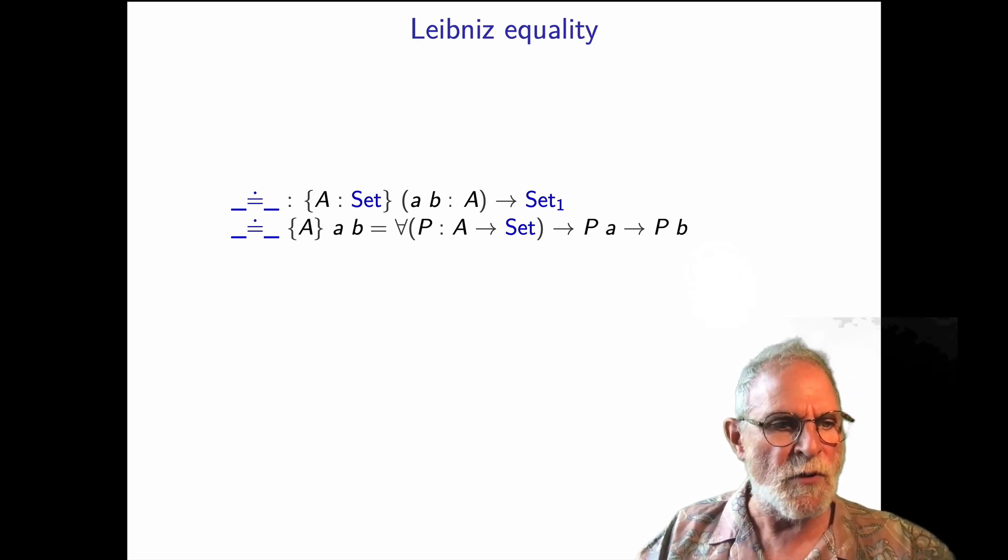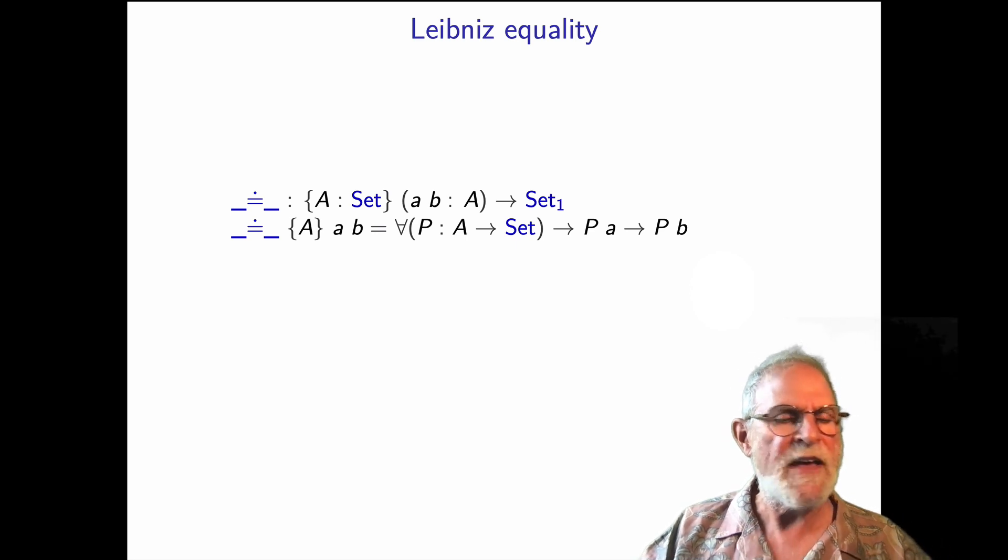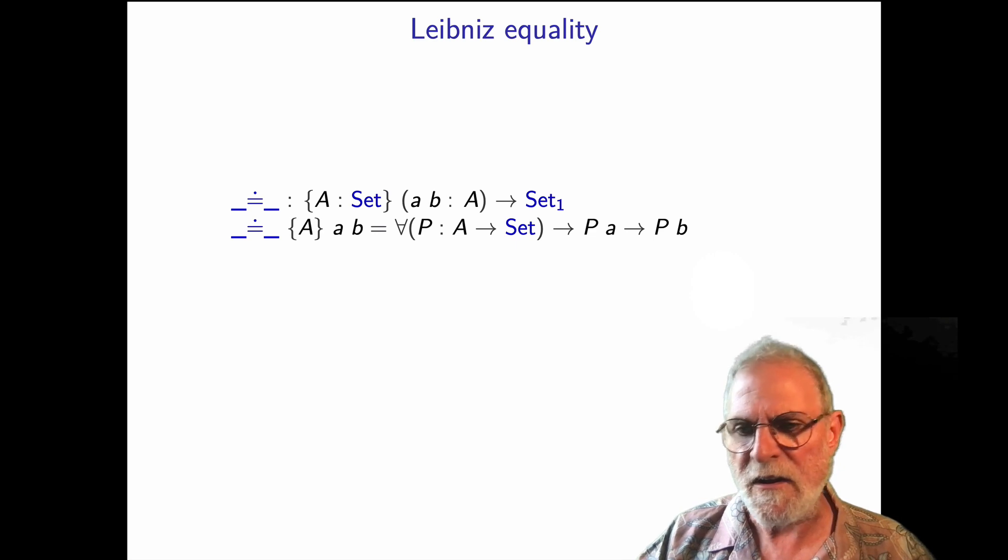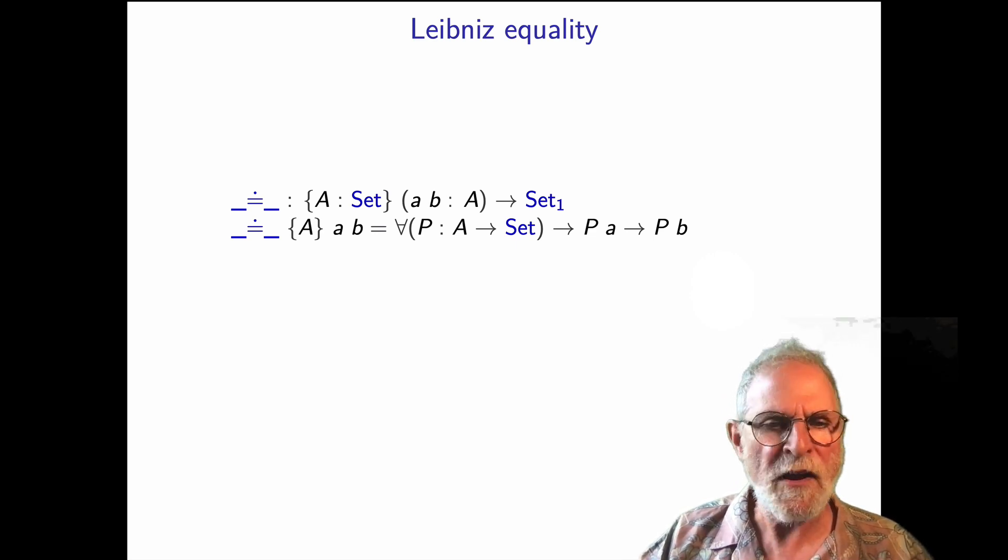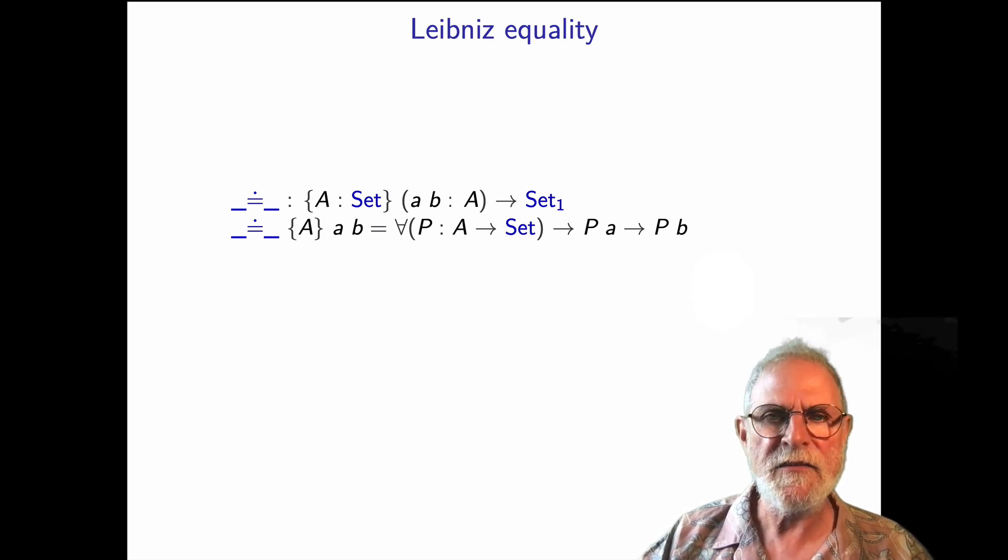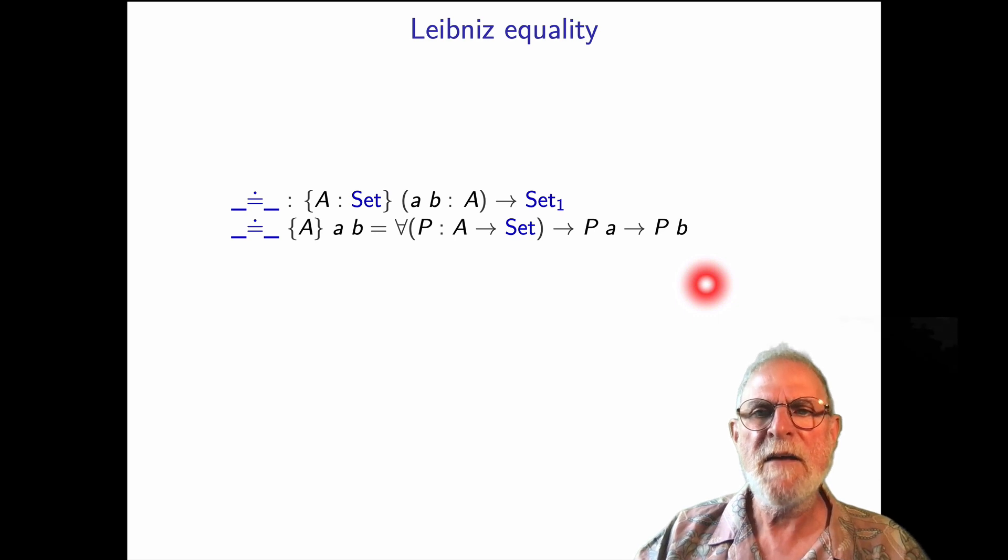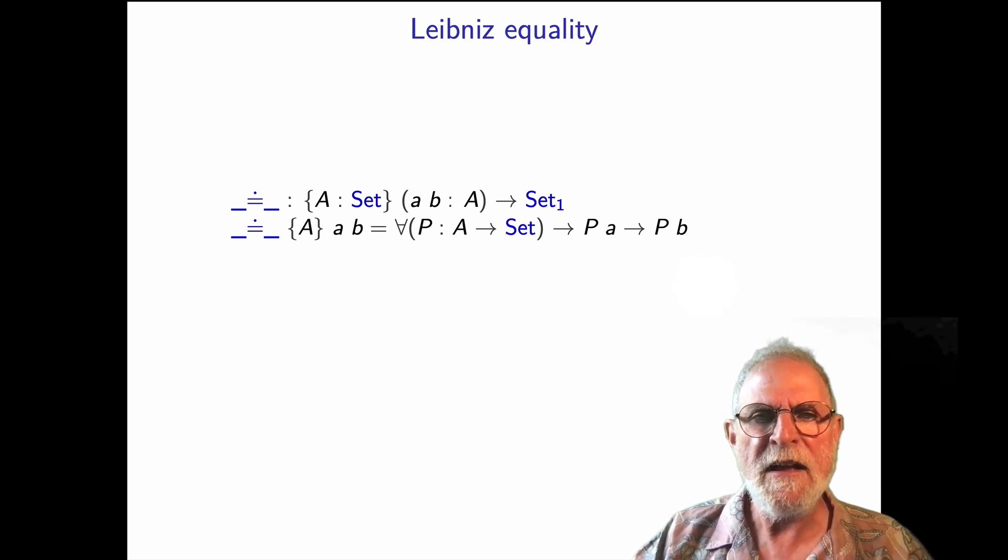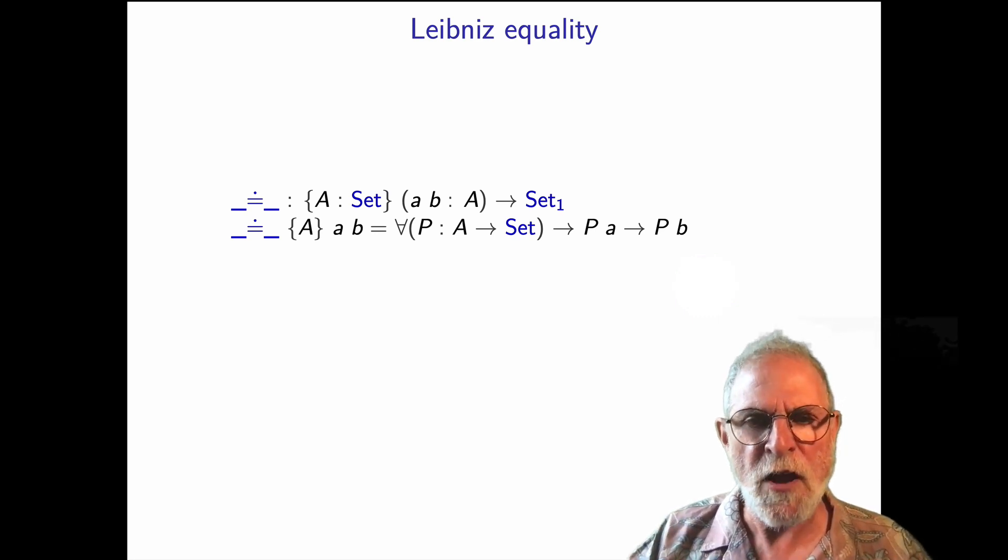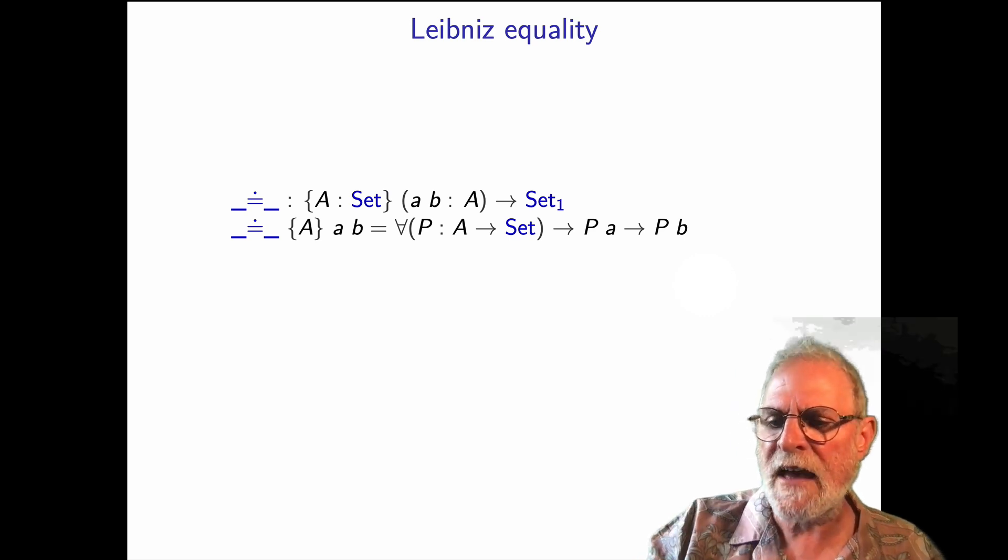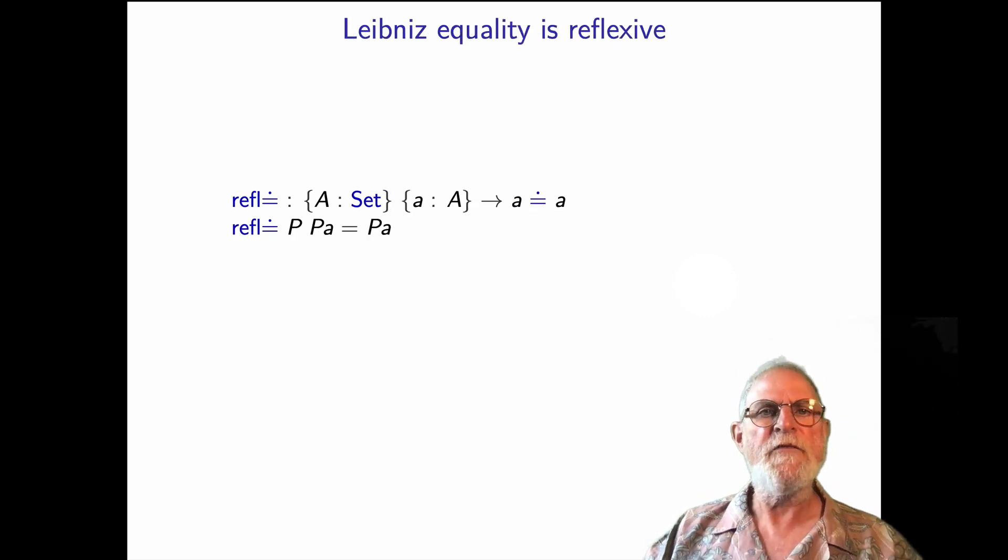So this is Leibniz equality. When are two things equal? They are equal if every property of one is also a property of the other. If you're a Star Trek fan, Mr. Spock expressed this by saying, 'a difference that makes no difference is no difference.' You'll notice that this seems quite asymmetric, right? We've got P of a implies P of b. But in fact, this is such a powerful notion that it is symmetric, and we'll see that in a moment.